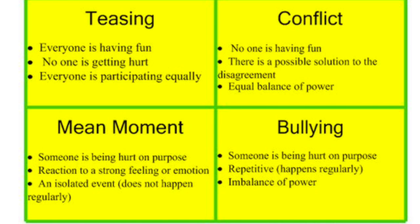Conflict is just a disagreement between two or more people. The biggest difference between conflict and bullying is that there's a solution to a problem which is based on that disagreement. Conflict is different from bullying because people aren't trying to hurt each other just to hurt each other — they're just having a disagreement that they can work through.